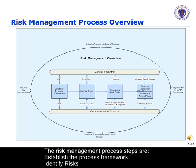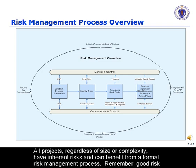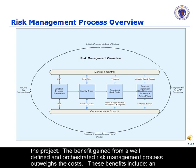The risk management process steps are: establish the process framework, identify risks, analyze and rank risks, develop and implement risk response strategies and action plans. All projects, regardless of size or complexity, have inherent risks and can benefit from a formal risk management process. Remember, good risk management takes time. Given this, it is essential that the project manager adopts a process that is appropriate for the complexity of the project.